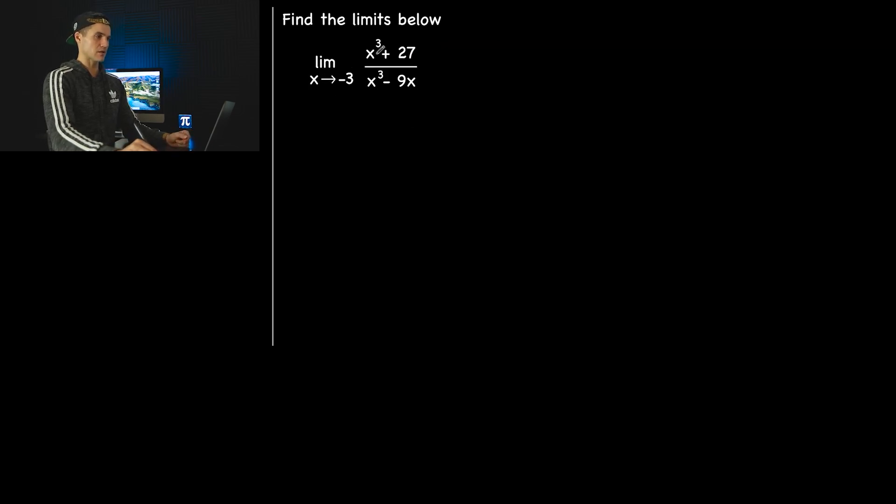Now moving on to the second limit. We have the limit as x approaches negative 3 of x cubed plus 27 over x cubed minus 9x. Always check direct substitution first. Notice that won't work. We would get 0 in the numerator, which is fine, but we also get 0 in the denominator. This would be negative 27 minus 9 times negative 3 is positive 27, so we'd get 0 in the denominator as well. We're going to actually have to solve this limit with factoring.